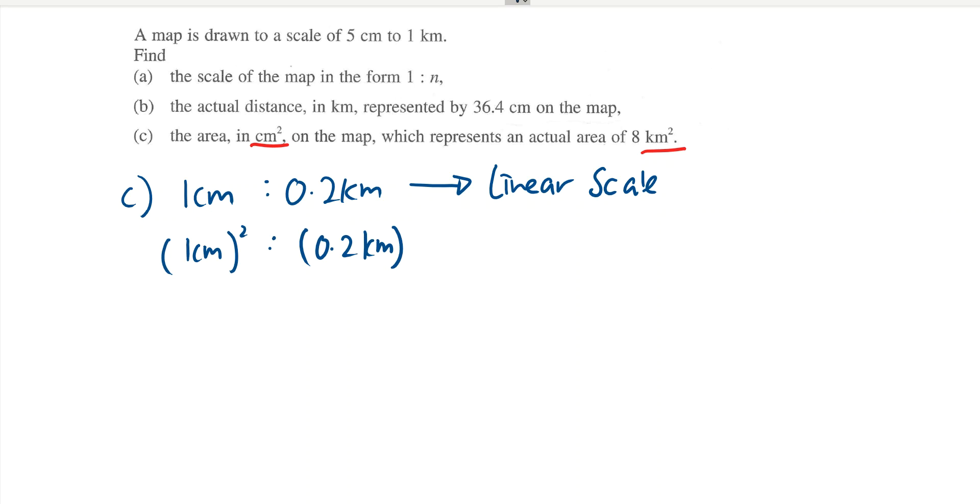Why do I do that? This is 1 cm, so if I want to find 1 cm square, 1 cm square is actually 1 cm by 1 cm. Now, in 1 cm it represents 0.2 km on the map, so 1 cm square will represent 0.2 km and 0.2 km on the map.